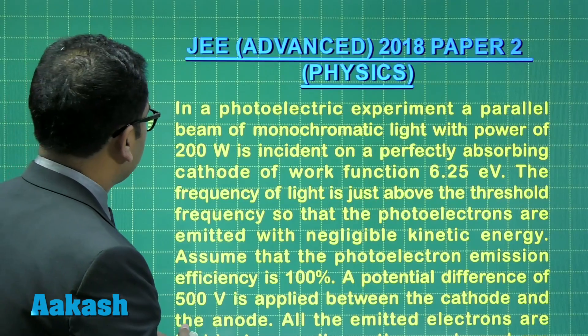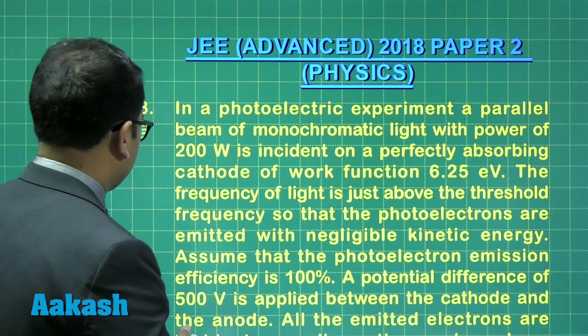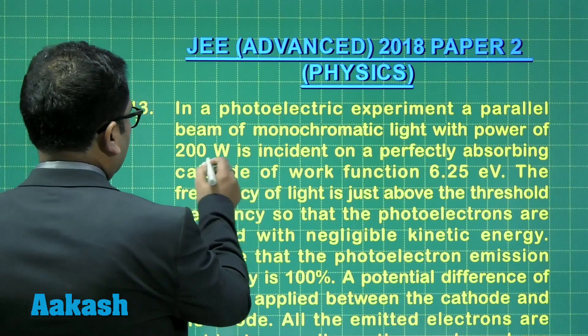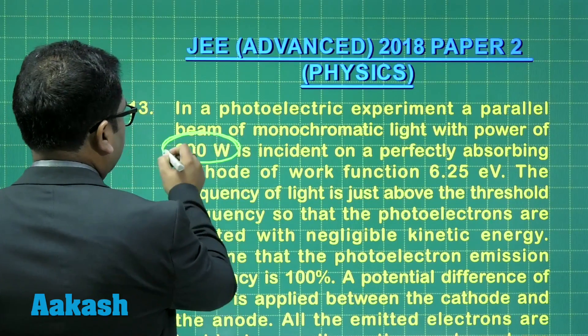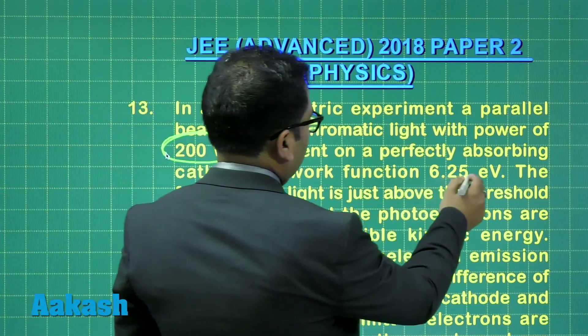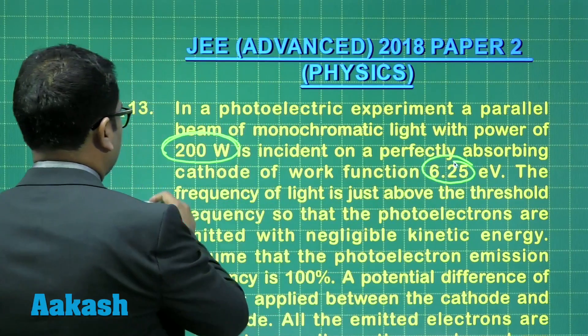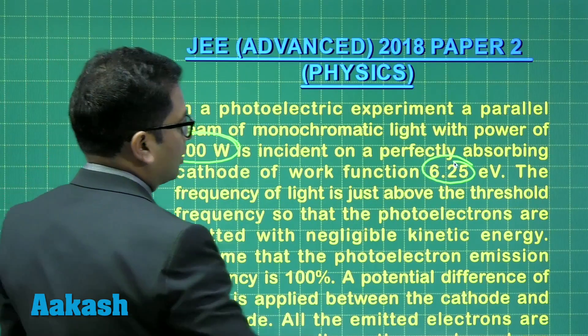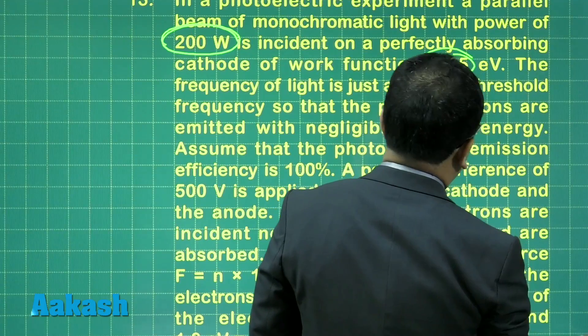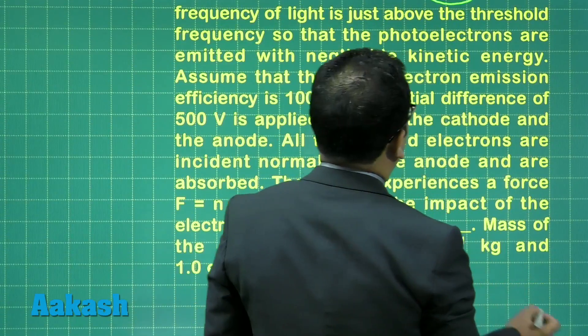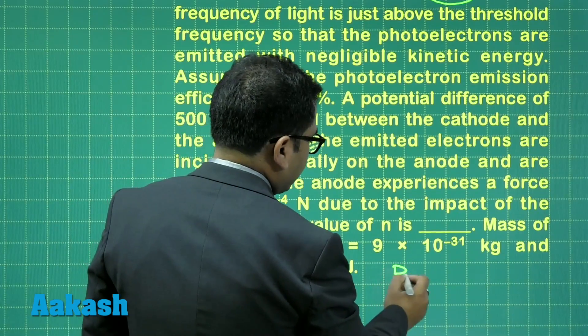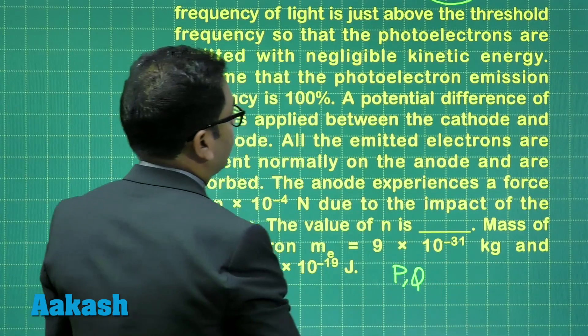Let's say, in a photoelectric experiment, a parallel beam of monochromatic light with power 200 watt - this is the power - is incident on a perfectly absorbing cathode of work function. In other words, the power has been given, the work function has been given. I'll just put everything in terms of variable, then at the end we'll be putting the value. So here I'll be saying P is given, the work function phi is given.